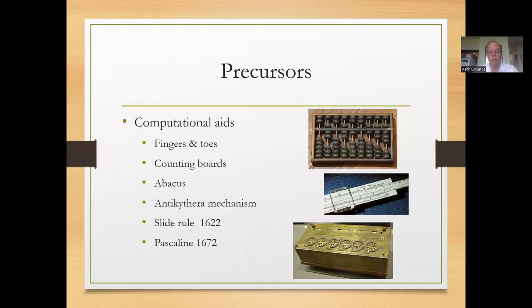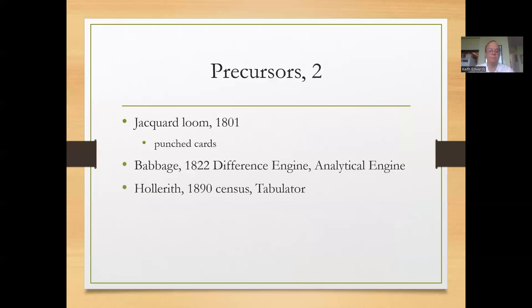From there we progressed to the slide rule, which was invented by Napier to help with logarithms — in particular Napier's bones — and then the Pascaline, which was a calculator invented by Blaise Pascal in 1672. Probably the first programmable device was something called the Jacquard Loom, in 1801. It had punch cards that allowed you to create intricate patterns automatically, so it no longer took a designer to create those patterns — you could program the loom to make them. You may have seen Jacquard polos, still named after Jacquard who invented that loom.